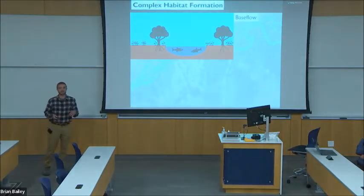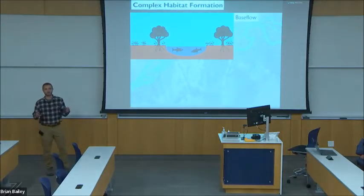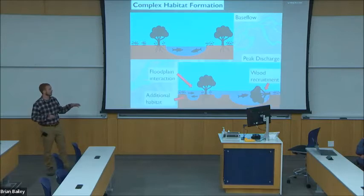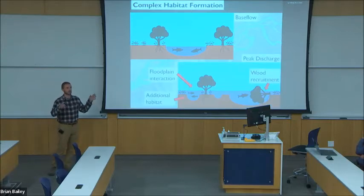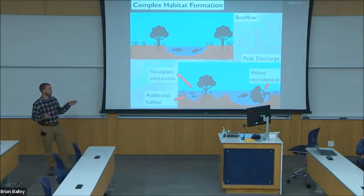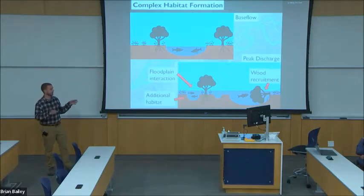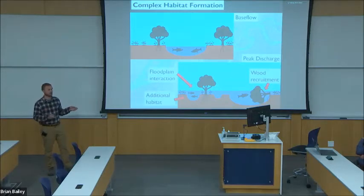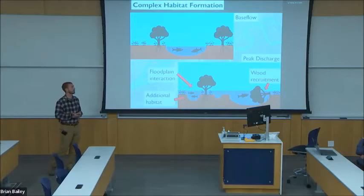Complex habitat is often formed by high, typically springtime floods that overflood the riverbank and interact with the floodplain, which can act to create additional habitat in the form of side channels and backwaters. These high flows can also shift the channel and recruit wood into the system that provides additional habitat.